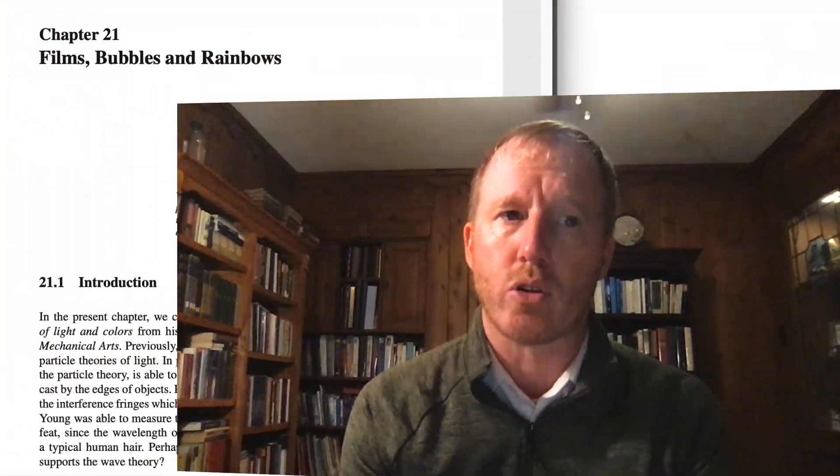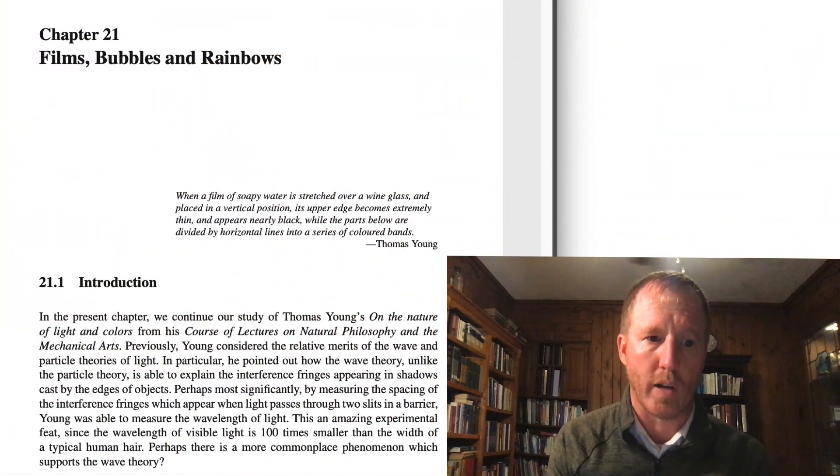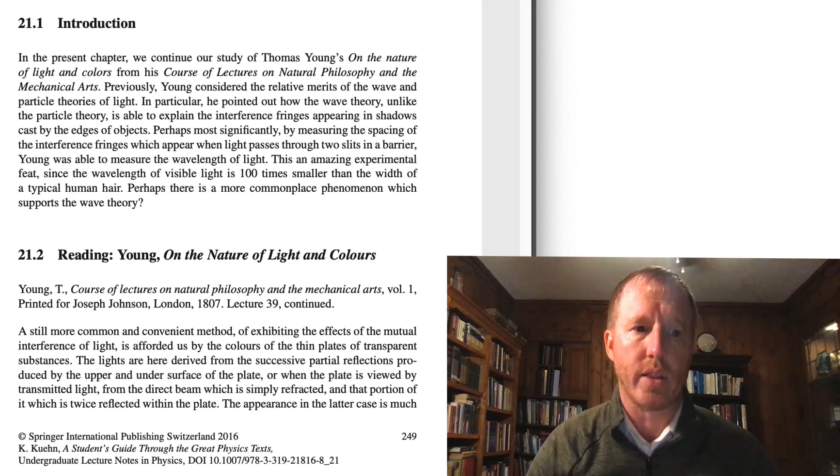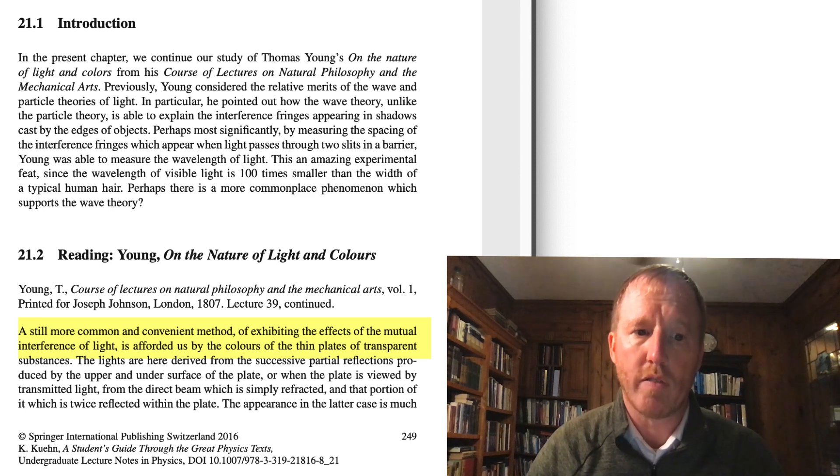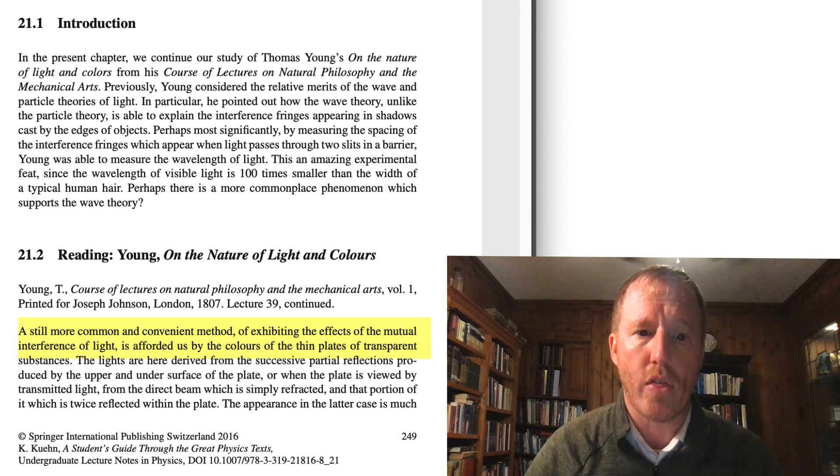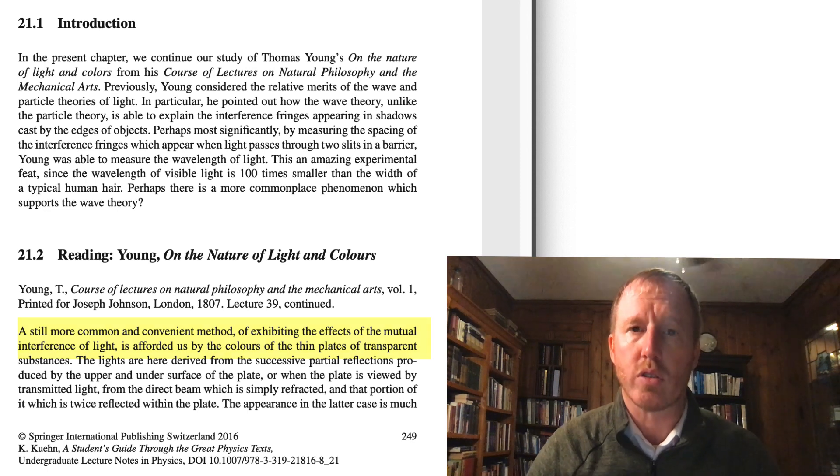Another piece of evidence that Young provides is the color of thin plates. So let's move into chapter 21 on films, bubbles, and rainbows. And there he states at the bottom of page 249 that a still more common and convenient method of exhibiting the effects of the mutual interference of light, which is a characteristic of wave nature of light, is afforded us by the colors of thin plates of transparent substances.